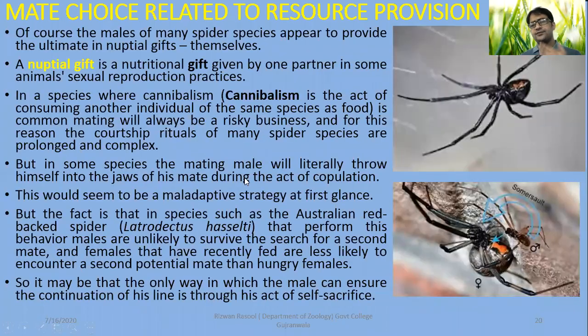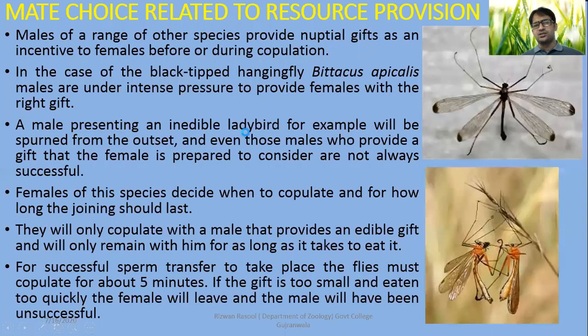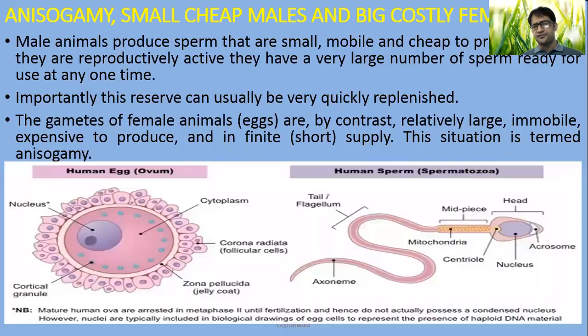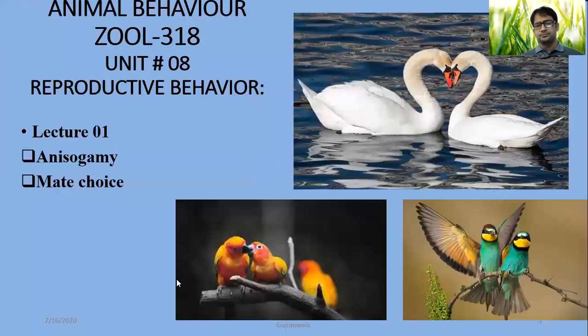In summary, mate choice and sexual selection — building on the differences in males and females in terms of anisogamy — have been discussed as the key points of this lecture on reproductive behaviour.